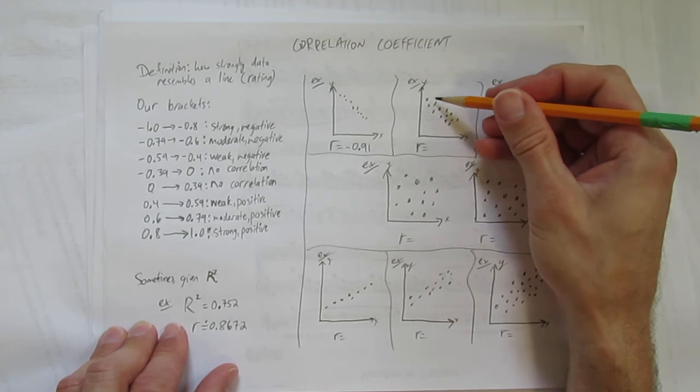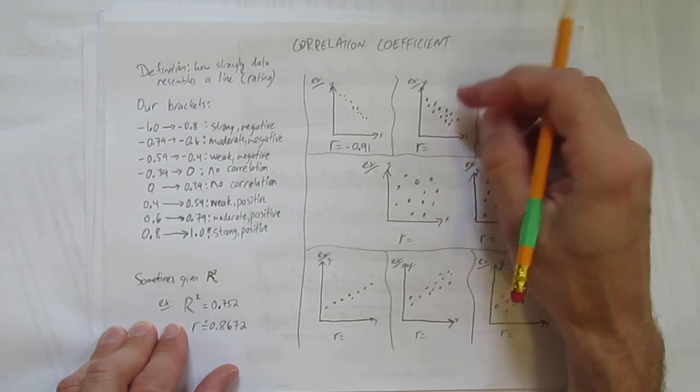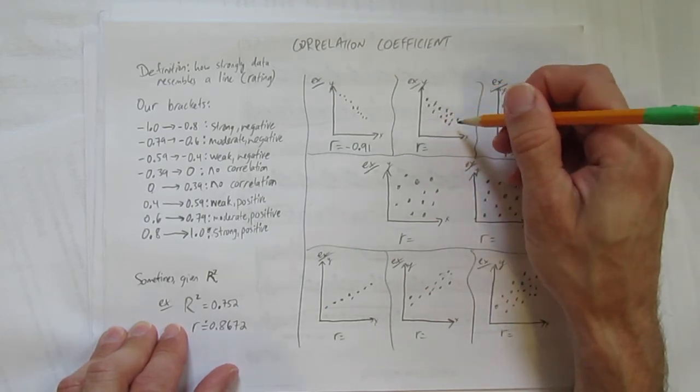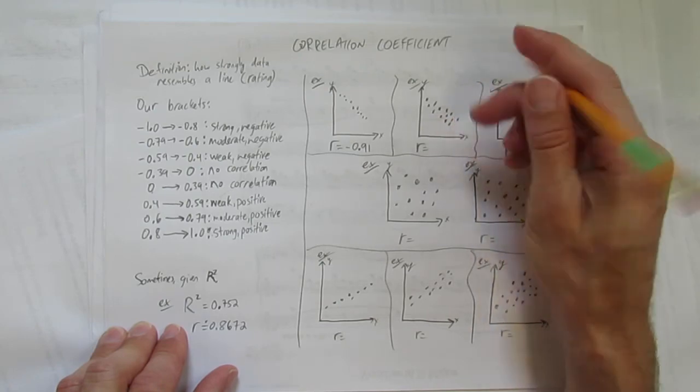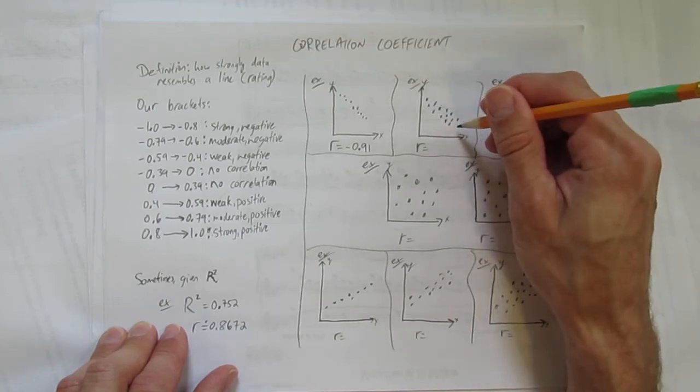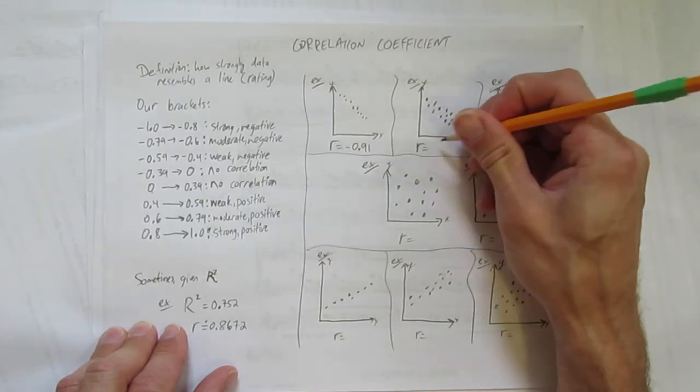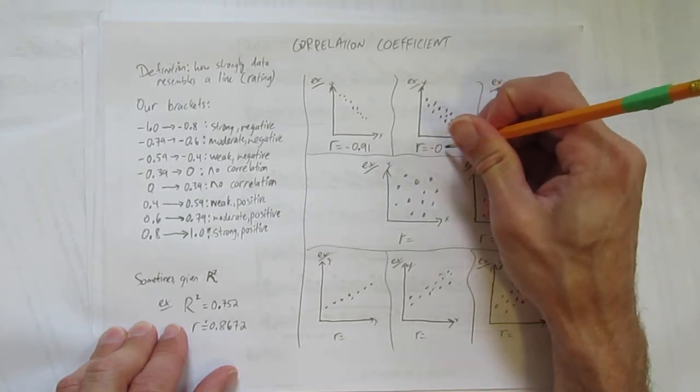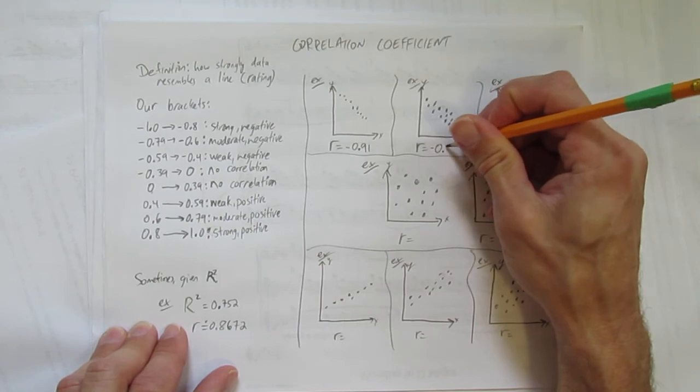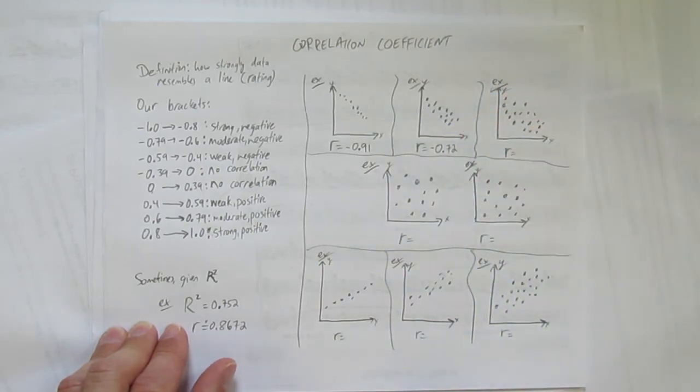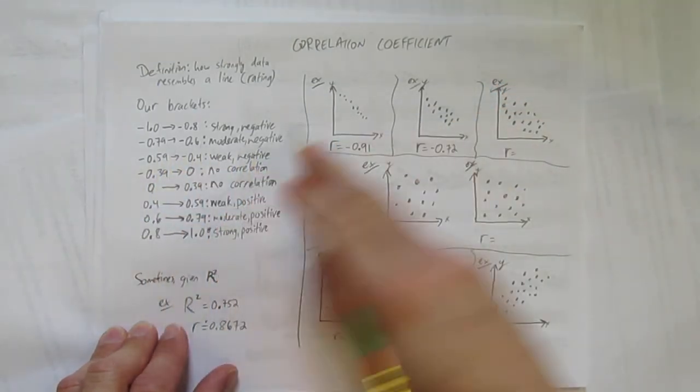This one here is also, well not strong, but still very clearly like a line though a little bit weaker and going down to the right. So that's negative, that's a moderate negative relationship. I'll estimate maybe that's negative point, I don't know, point seven two. I'm just estimating somewhere in here, that's moderate negative.